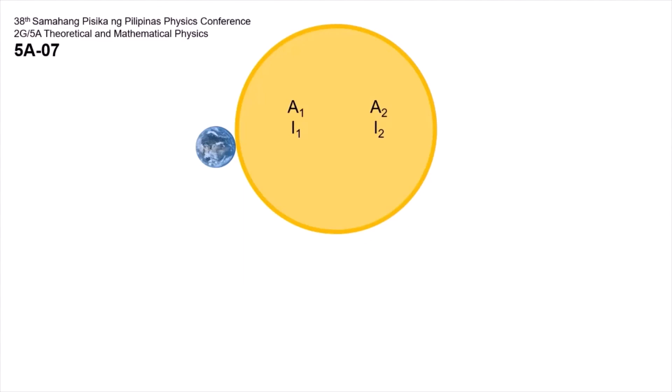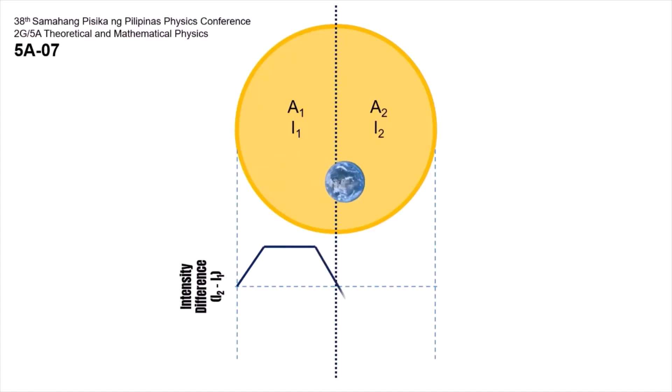Here I introduce to you the folded transit method. The folded transit method divides the host star into two areas of ideally equal intensities. This can be done using a split detector. As the planet passes through the star, the intensity distribution of both areas will be measured. And from there, the intensity difference will be obtained resulting in the folded transit light curve.